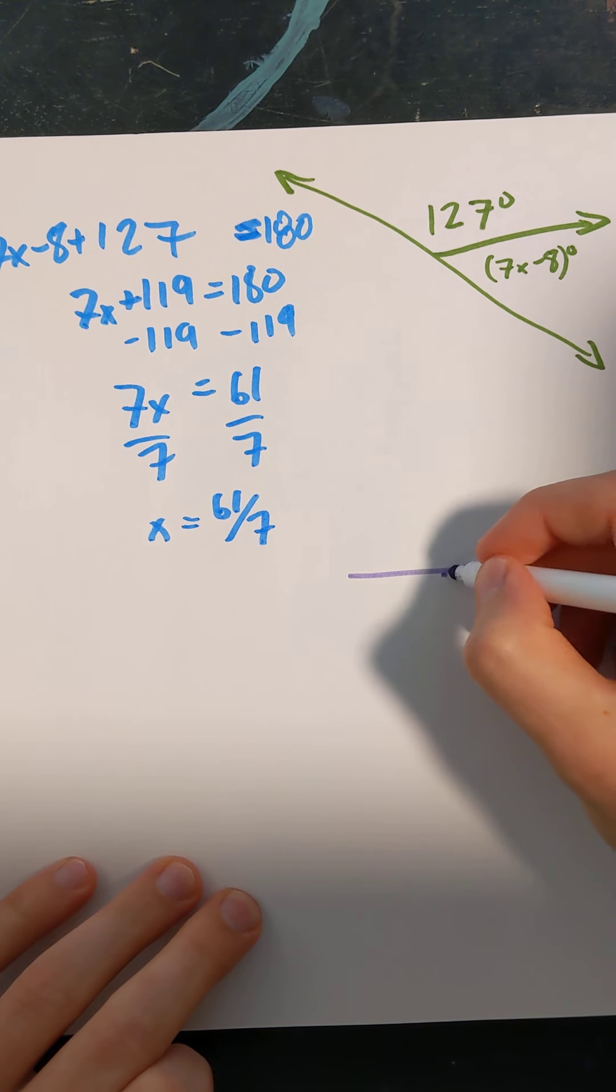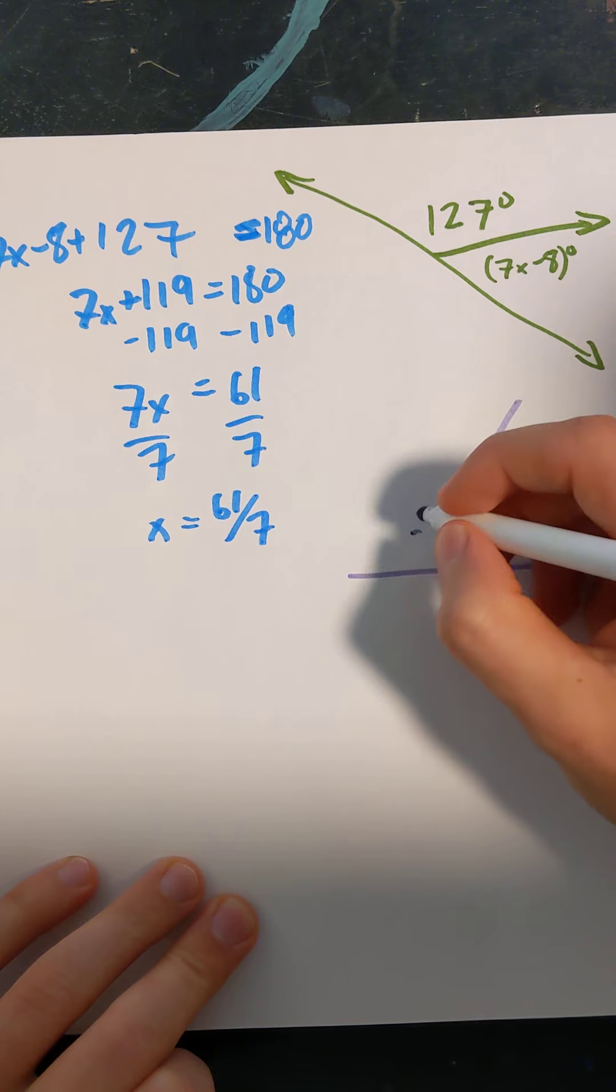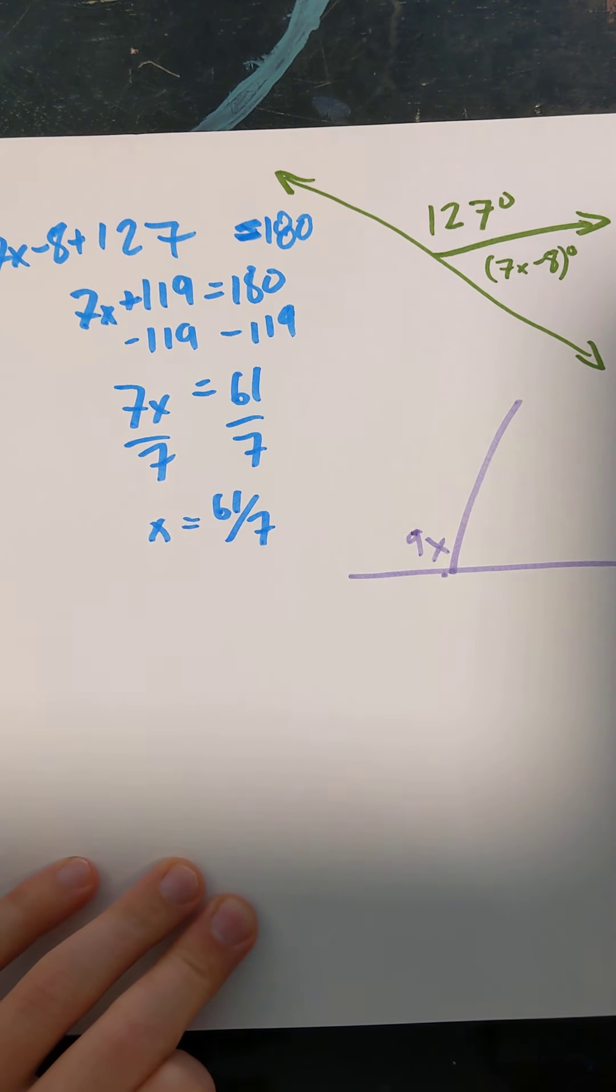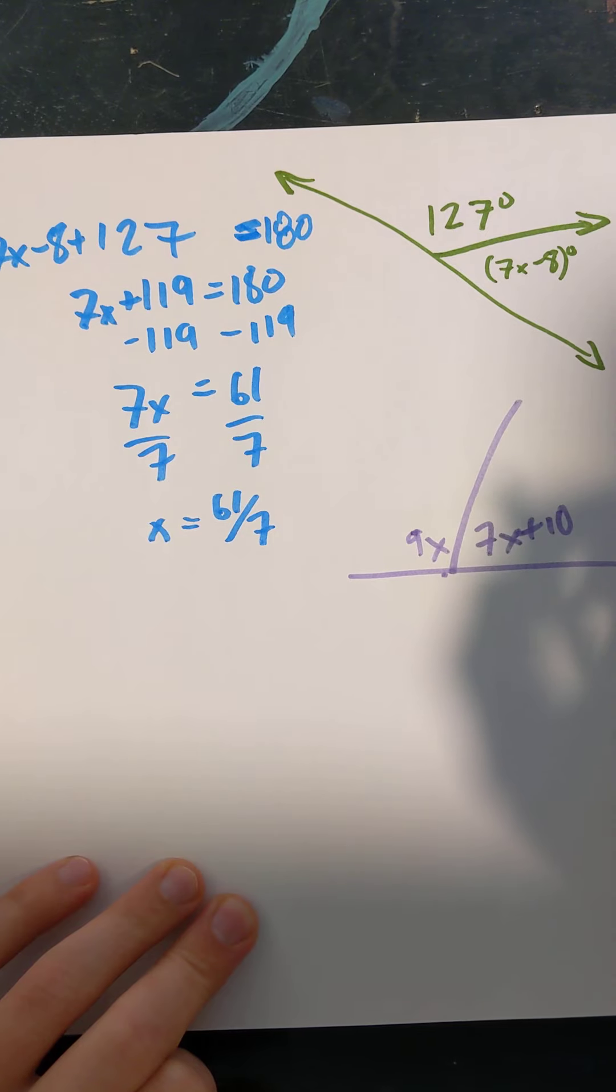Let's say we're dealing with this situation. This is 9X over here, and let's say this is 7X plus 10. So maybe a little bit smaller.